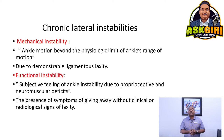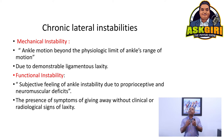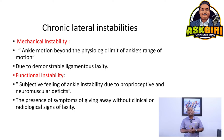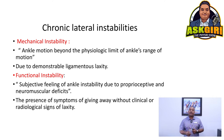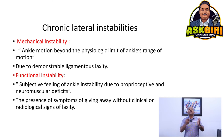Functional instability is about proprioception — your joint position sense — and lack of neuromuscular control. Remember: strength and stability are different. Stability is motor control — the brain's ability to activate certain muscle groups at a certain time for a certain task, in a fraction of a second. If that doesn't happen fast enough, you strain your ankle. That's motor control training, which is different from just strengthening.